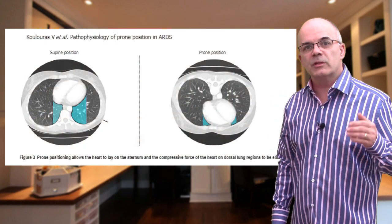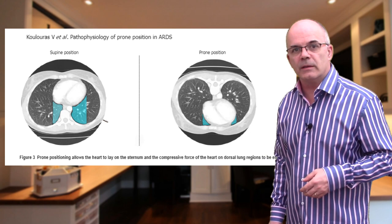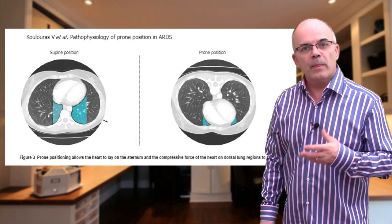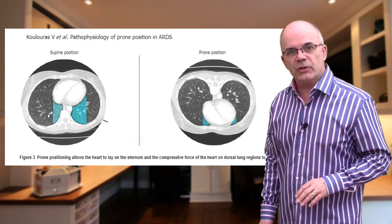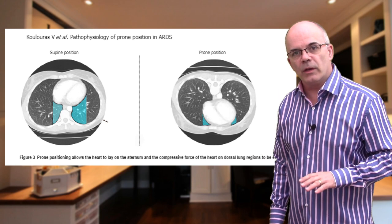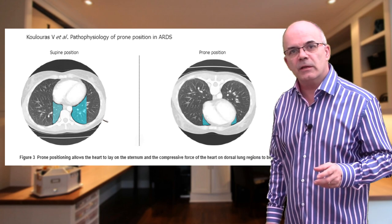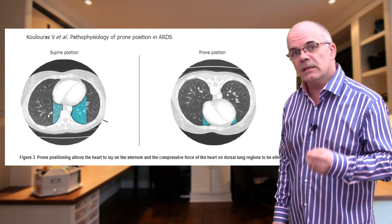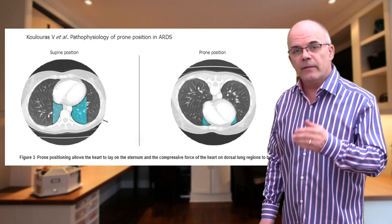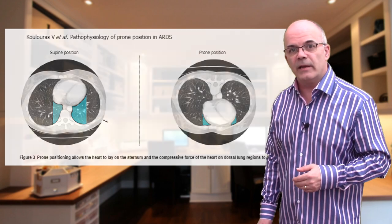There is also some evidence that proning the patient removes some of the weight of the heart from the dependent lung. In the prone position, the weight of the heart will lie on the sternum and not the lung. This has also been shown to result in a significant, rapid, and persistent improvement in oxygenation in the ARDS patient with heart failure.